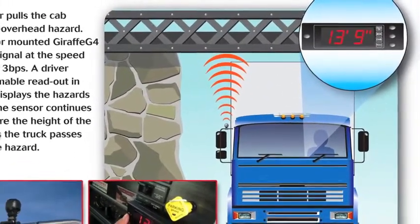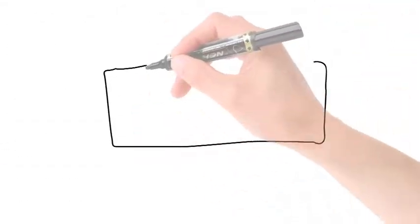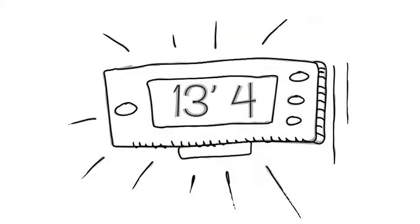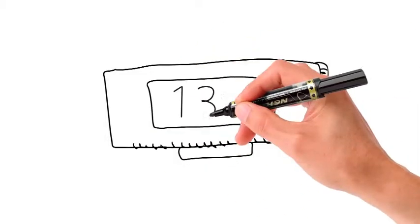The signal is so fast it refreshes itself four times a second. If the height of the obstacle is lower than what is programmed in the unit, it will flash and beep and let you know that there is no clearance. If the measured height is higher, you're safe to go.